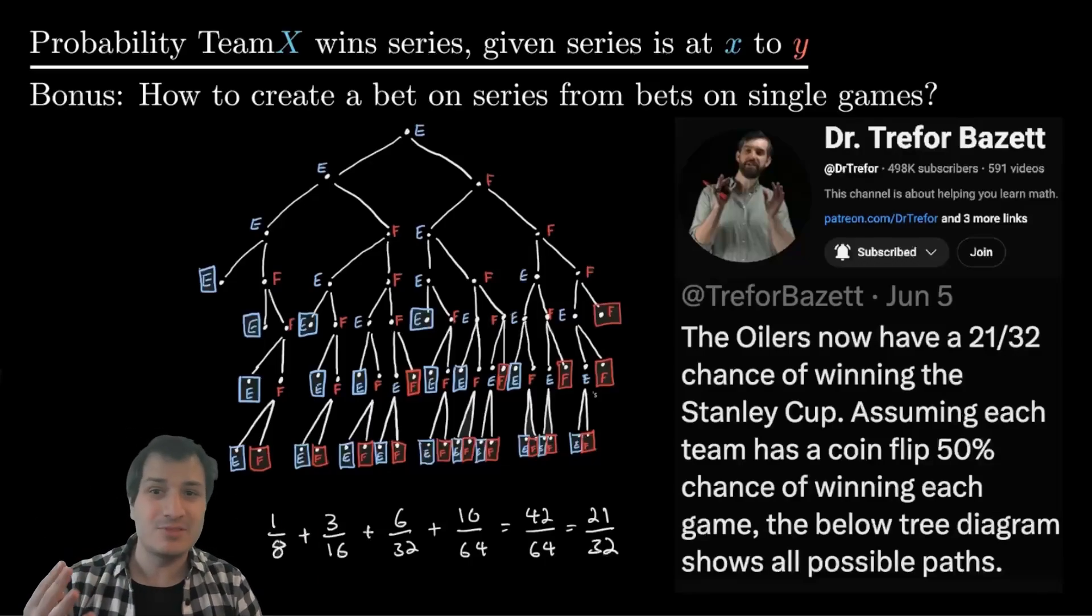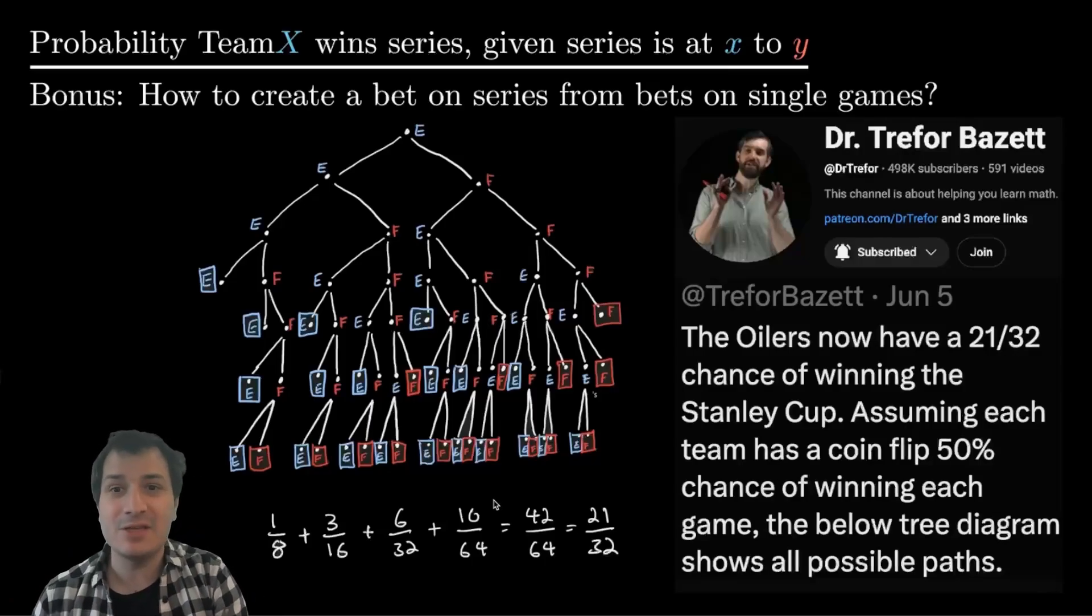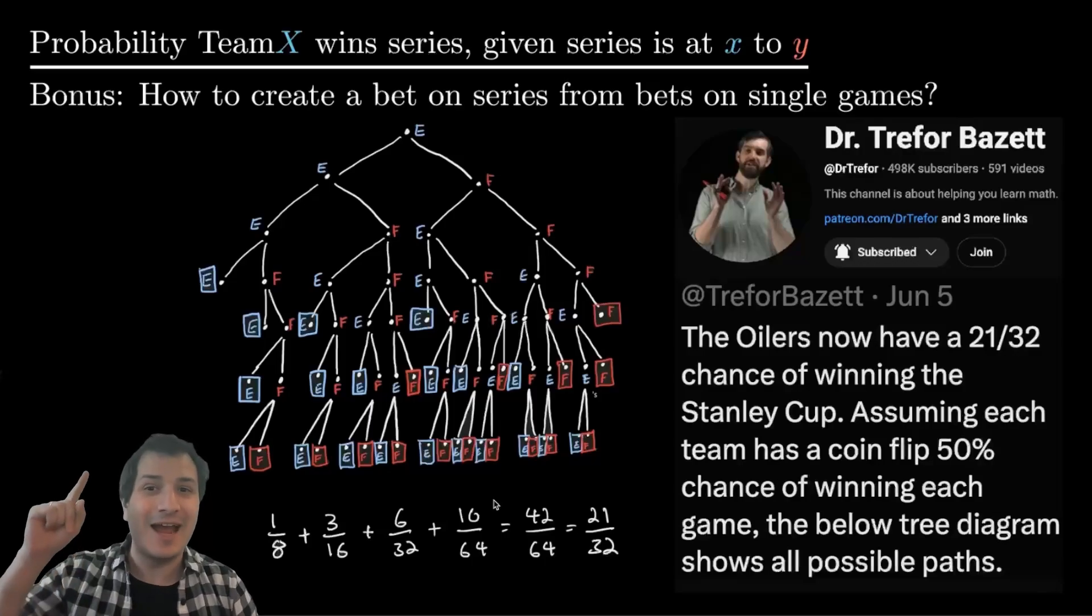Whether or not the Oilers win four games to nothing, or if it goes all the way to game seven, you want the final outcome of your bets to be the same thing. And coming up with a sequence of bets is actually kind of tricky.